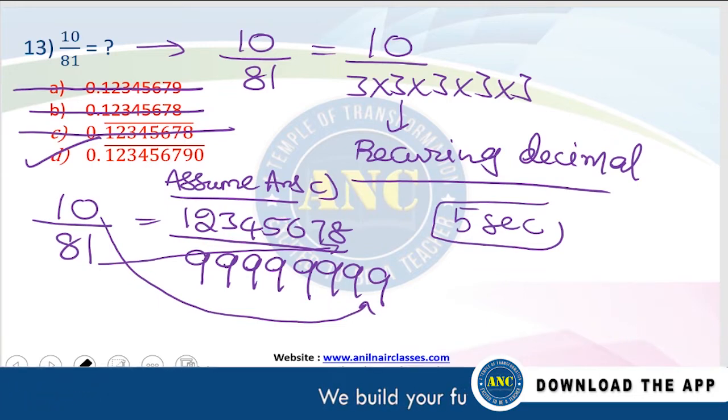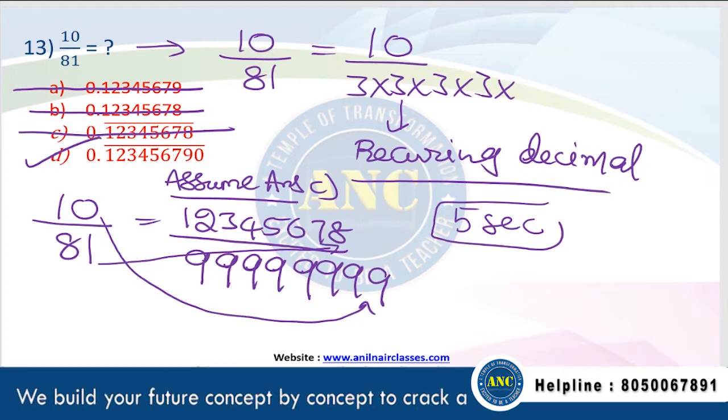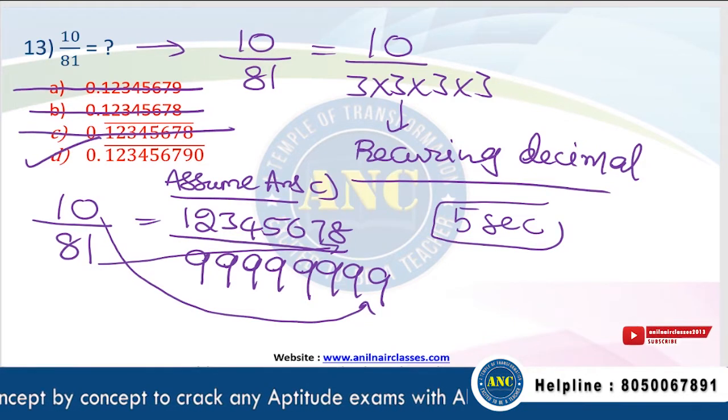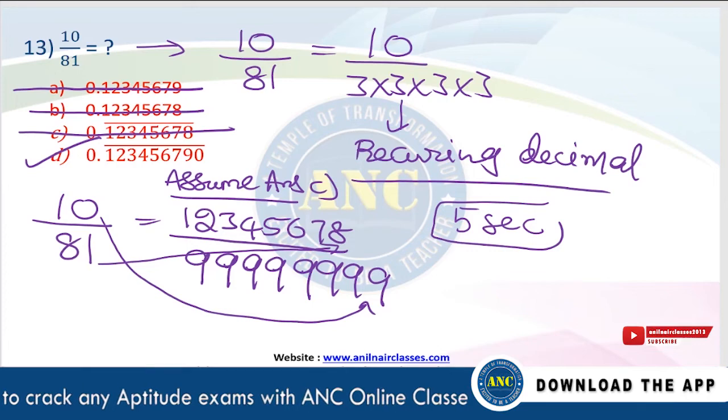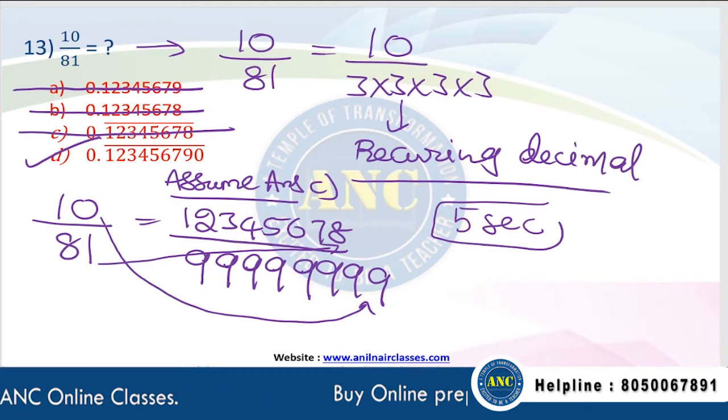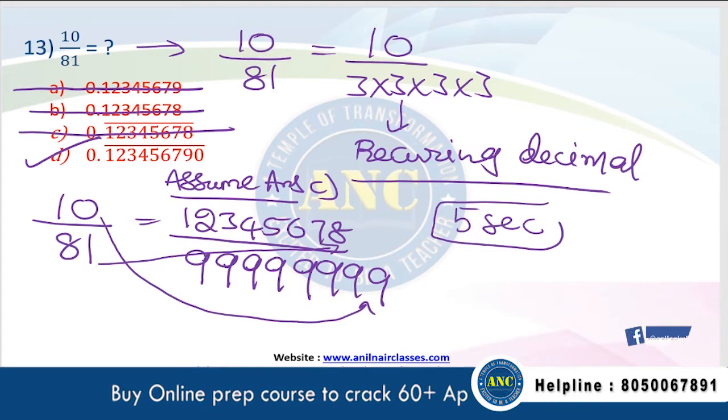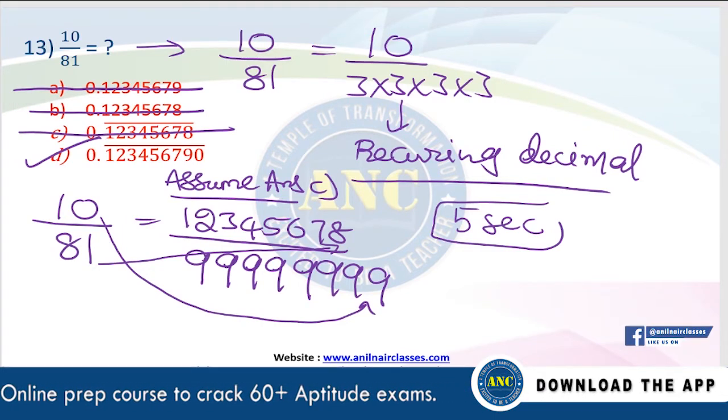10 by 81 is 10 by 3 into 3 into 3 into 3. I wrote 5 threes. It is only 4 threes. I hope it is clear. Kindly reply it in the live chat. Is it clear? Is it clear?